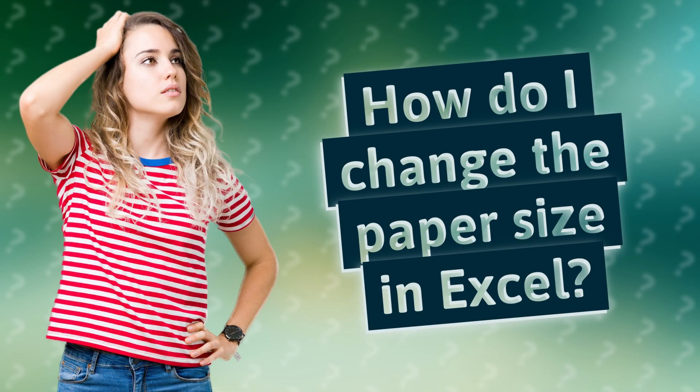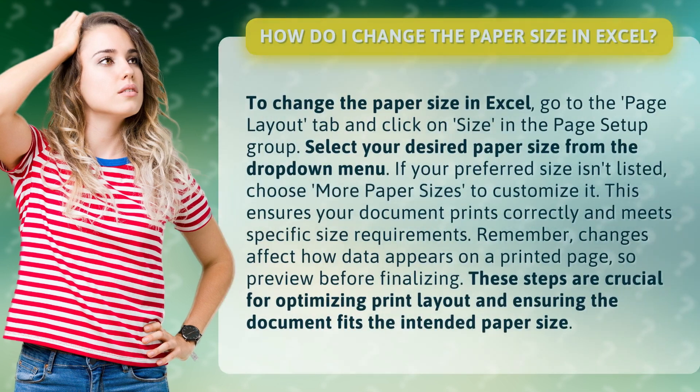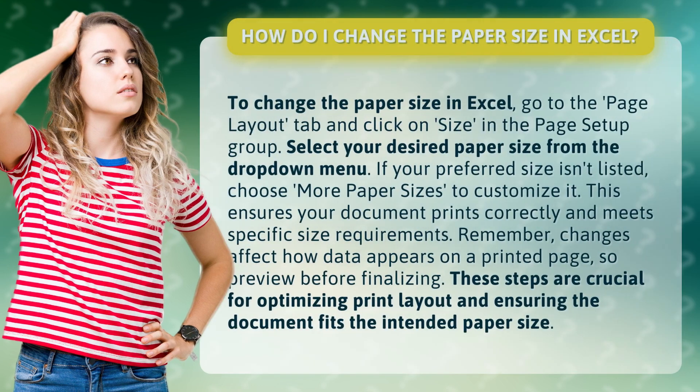How do I change the paper size in Excel? To change the paper size in Excel, go to the Page Layout tab and click on Size in the Page Setup group. Select your desired paper size from the drop-down menu.